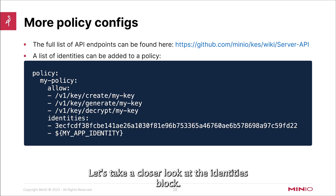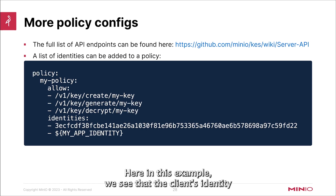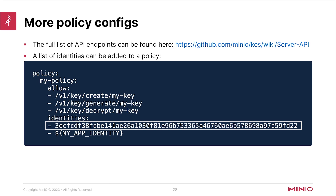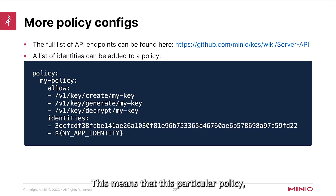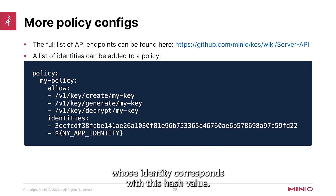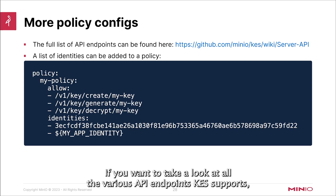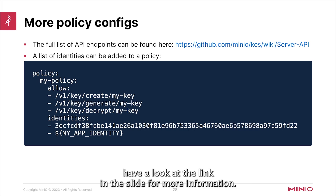Here, let's take a closer look at the identities block. In this example, we see that the client's identity is represented by a SHA-256 hash starting with the letters 3ECF. This means that this particular policy, called my-policy, applies to any client whose identity corresponds with this hash value. If you want to take a look at all the various API endpoints KES supports, have a look at the link in the slide for more information.